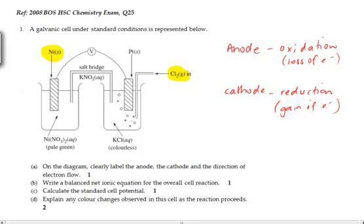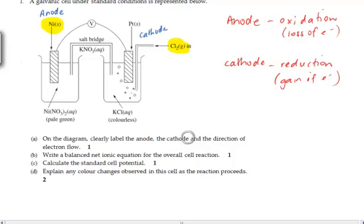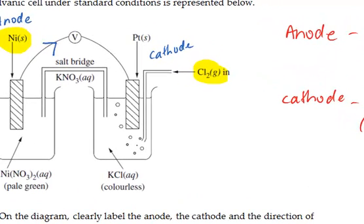So immediately we can label nickel as the anode, and we can label the platinum as the cathode. Now, although chlorine is the one that will be undergoing reduction, we still label the platinum electrode as the cathode, because the cathode has got to be a metal electrode. And lastly, which direction will the electron flow in? Well, if the anode is the one that's losing electrons, they are releasing the electrons, which then travel to the cathode. Therefore, electron goes from the anode to the cathode, and I'll indicate that with an arrow this way.